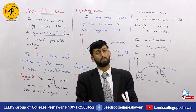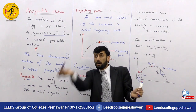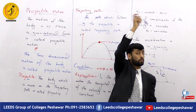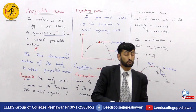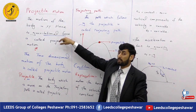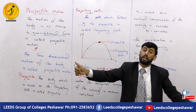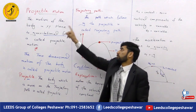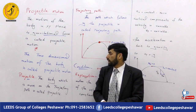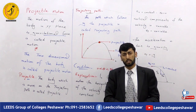In projectile motion, the only force acting on the body is the gravitational force. The body is free from every other force. Because gravitational force is involved, the motion becomes two-dimensional, described in the x-y coordinate system. This two-dimensional motion of a body is called projectile motion.